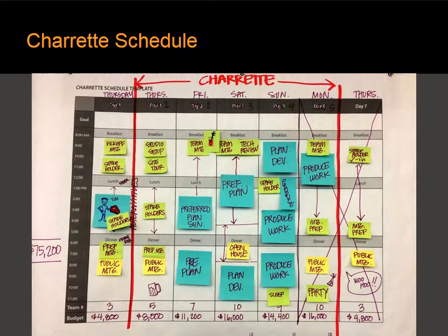This particular schedule — the team created a five-day charrette preceded by a one-day session. On the left you see that Thursday, which was at least a week before the five-day charrette itself, and followed by another one-day session on Thursday after the charrette. You'll also see budgeting at the bottom, showing the number of team members present, the people being paid each day of the charrette, and an estimated budget for their labor.